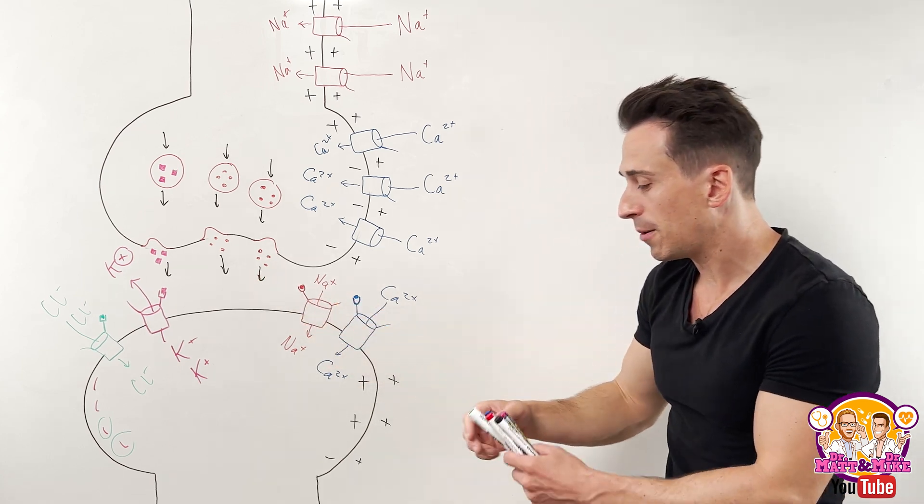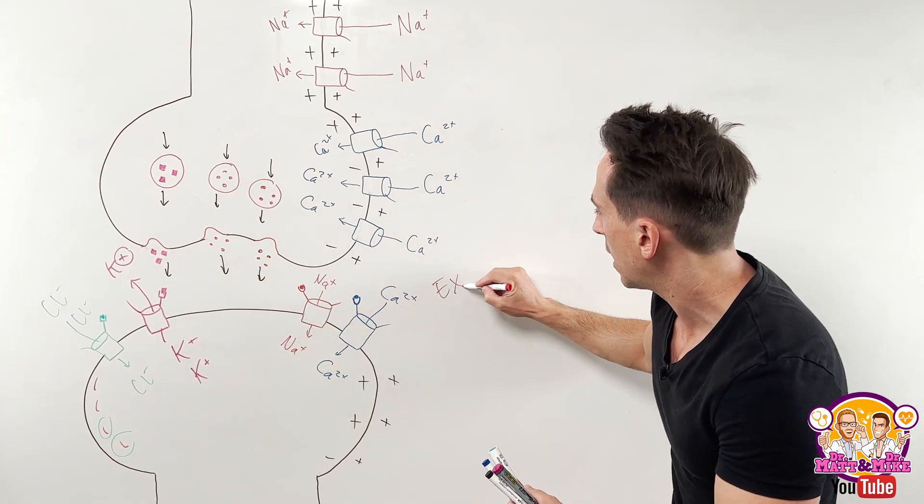They will then bind to receptors often coupled with specific channels that are specific to that neurotransmitter. If it's excitatory, like we've got on this side, this is excitatory.